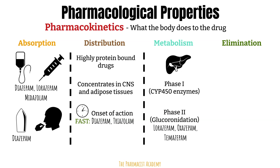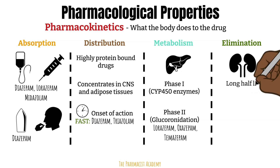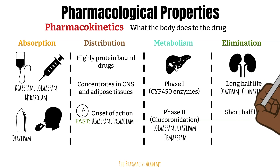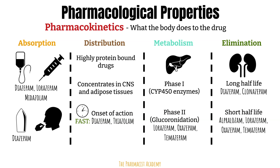Lorazepam, oxazepam, and temazepam are the preferred agents in elderly patients. Benzos are primarily eliminated by the kidneys, so caution is needed in renal disease — especially for benzos with a long half-life, such as diazepam and clonazepam, which should be avoided in elderly or renal-impaired patients. Benzos with a short half-life include alprazolam, lorazepam, oxazepam, and temazepam. The pharmacokinetics of these drugs are crucial, as they will definitely influence how you manage patients on benzodiazepines.